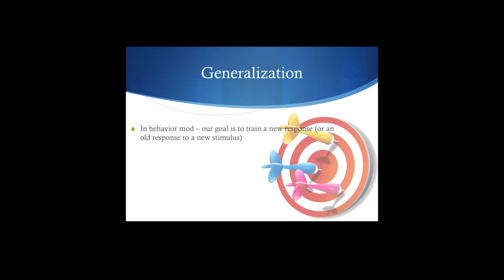Oftentimes what we're trying to do is train somebody to do something. Sometimes it's training a new response — we're talking about shaping and chaining and all those things. Other times it's just getting an old response to occur in the presence of a new stimulus. Something you're already doing, but we want to do it in a new context or a new situation. So when we're talking about that type of stuff, we're talking about generalization.